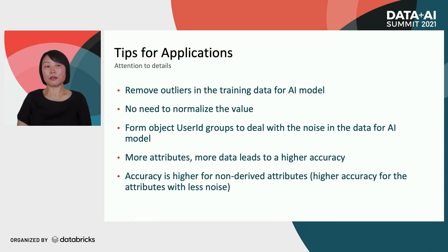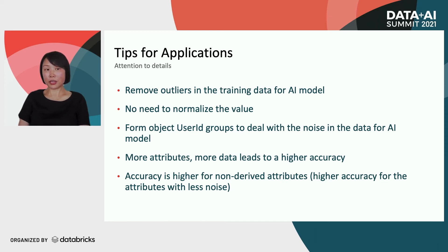Our approach is very helpful for filling nulls in big data with distributed computing. We'd like to share some tips we learned. First, for any AI model, make sure you remove outliers from your training dataset — otherwise the model won't be generic enough for good predictions. Also, in our experiments, we tested normalizing versus not normalizing the values, and it turns out it makes no difference — so you can save time by skipping normalization.